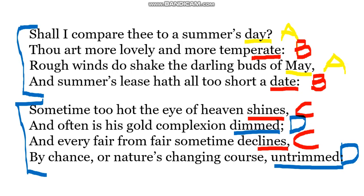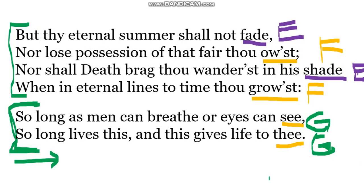In quatrain three, we move to the turn of events. Line nine starts with the word 'but' — this is the opposition and contradiction. 'But thy eternal summer shall not fade.' It is pointed out here that your brightness, your loveliness, will never fade at all. Line 10: 'Nor lose possession of that fair thou ow'st.' You will never lose your beauty, your loveliness, your brightness. The word 'but' signals the turn of events and belief that begins in quatrain three.